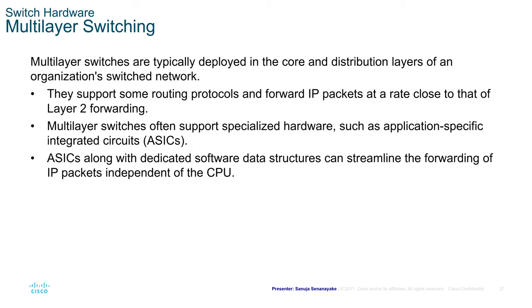Multi-layer switching. Multi-layer switches are typically deployed in the core and distribution layers. They support routing protocols and forward IP packets at a rate closer to layer 2 forwarding. Multi-layer switches often support specialized hardware such as ASICs (Application-Specific Integrated Circuits), which along with dedicated software data structures can streamline the forwarding of IP packets independent of the CPU.